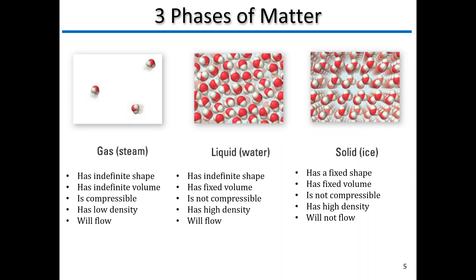Liquid water has an indefinite shape — it takes on the shape of its container — but it does have a fixed volume, whereas the gas has no fixed shape and no fixed volume. We can't compress the liquid because there's not much empty space. It's highly dense. The chances of throwing a dart into a liquid and actually hitting a molecule is very high. We know it can flow — we can pour things like water. Then we look at solid: now we have a fixed shape and a fixed volume. We can't alter the shape of a solid without actually breaking the bonds. It's not compressible, it's highly dense, and of course it won't flow.